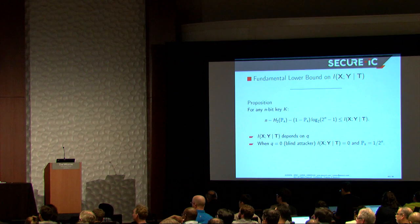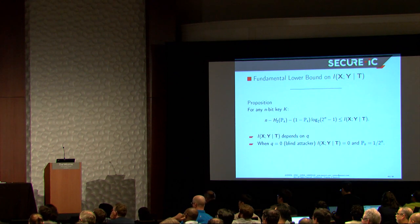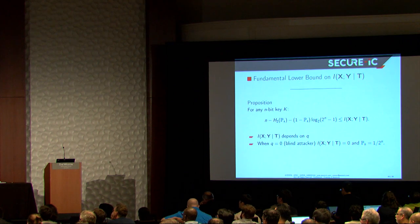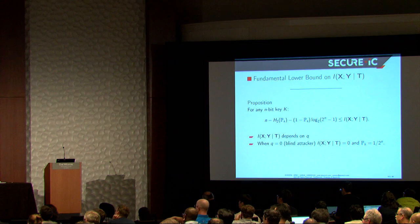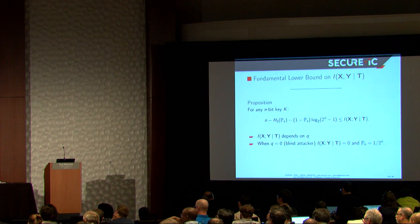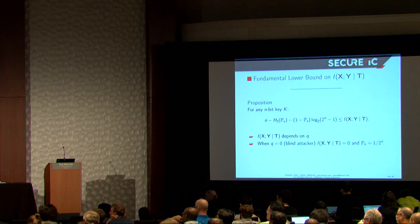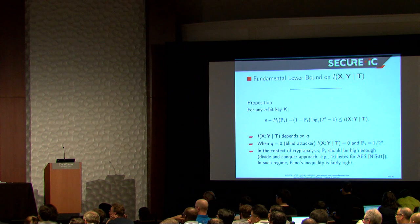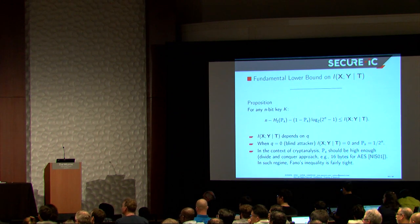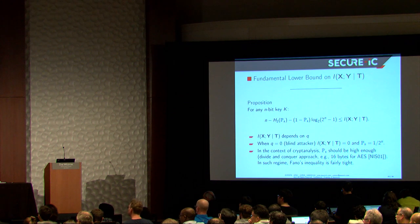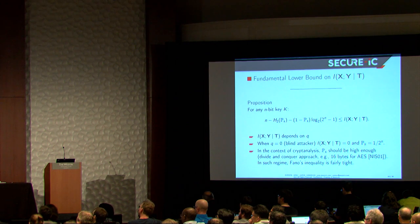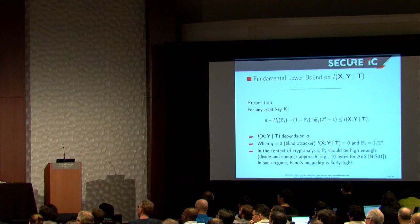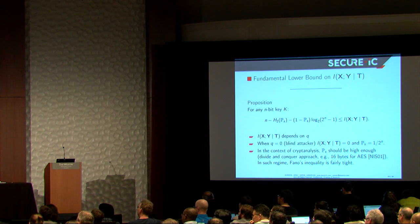So for example, when there is no measurement at all, what happens? Then this mutual information is zero. Actually this quantity is always positive, so it is equal to zero, and the only solution is that the probability of success is one divided by the number of keys, which is what you expect. What will be interesting is when the number of traces will be larger, and so we will take the probability of success high enough, because you know that to extract the key we do a divide and conquer approach, so we need to have a fairly high confidence for each byte we extract. And in such regime, actually, Fano's inequality will be quite tight. This is what I will show you.